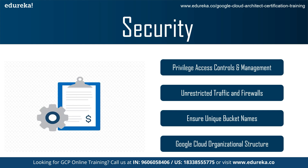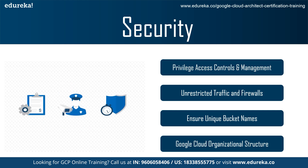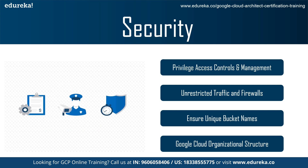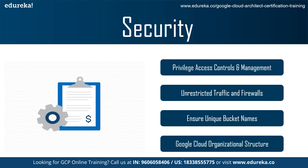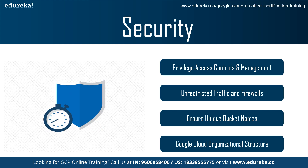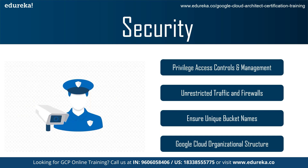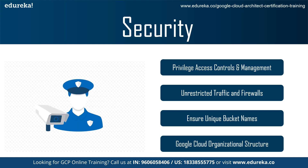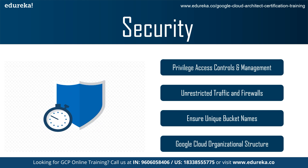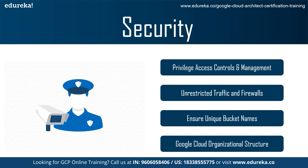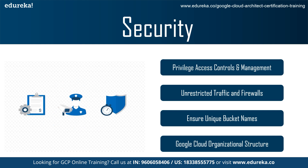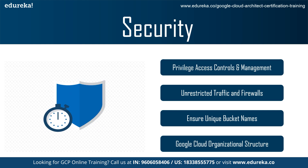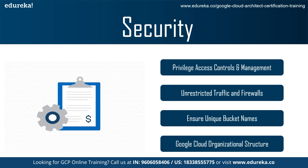Third, ensure your bucket names are unique across the whole platform. It is recommended to append random characters to the bucket name and not include the company name, making it harder for an attacker to locate buckets in a targeted attack. Fourth, set up a Google Cloud organizational structure. When you first log in to your Google Admin Console, everything is grouped into a single organizational unit. Planning out how you want to organize your units and hierarchy before diving in will help you save time and create a more structured security strategy.